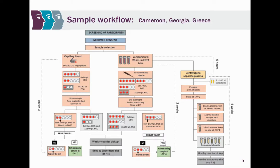The sample workflow involved a finger prick for each participant, completing filter papers, and collecting venous blood in EDTA tubes which were centrifuged to obtain plasma. The people who carried out sample collection differed by country: in Cameroon it was mainly lab technicians, in Georgia it was nurses, and in Greece it was physicians. A volumetric pipette was used to measure 70 microliters of blood recommended for the filter paper, following a standardized procedure across all sites.